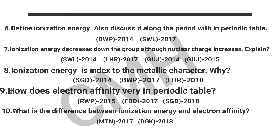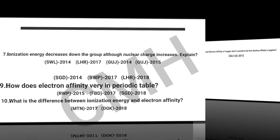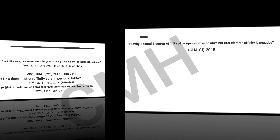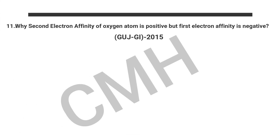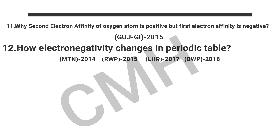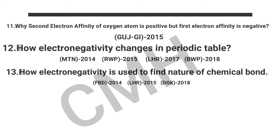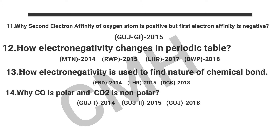Question number 10: What is the difference between ionization energy and electron affinity? Question number 11: Why is the second electron affinity of the oxygen atom positive, but the first electron affinity is negative? Question number 12: How does electron affinity change in a period?